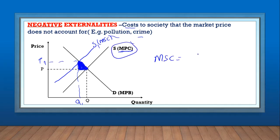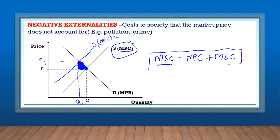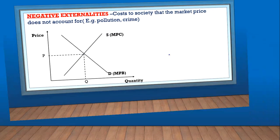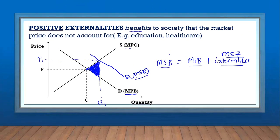To find the true cost to society — the marginal social cost — you take the marginal private cost and add the marginal external cost, represented by that triangle. The market only looks at the private cost and does not account for the externality or social cost. Similarly, for benefits, the market only looks at the marginal private benefit, ignoring externalities and the marginal social benefit. This is why the market fails.